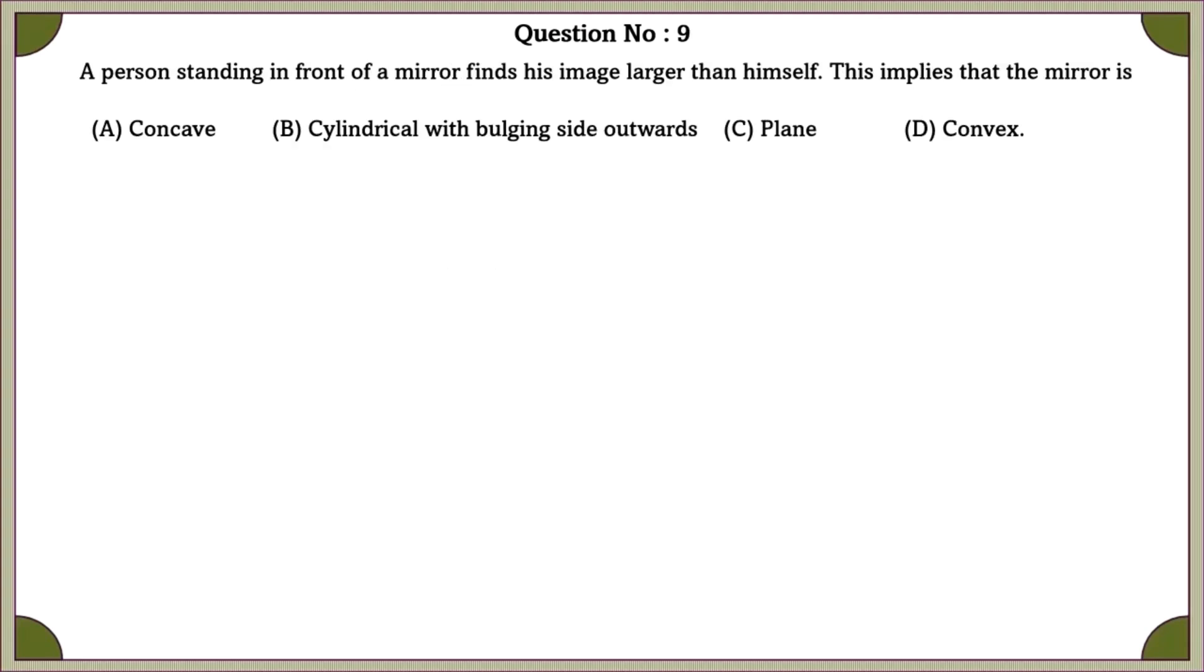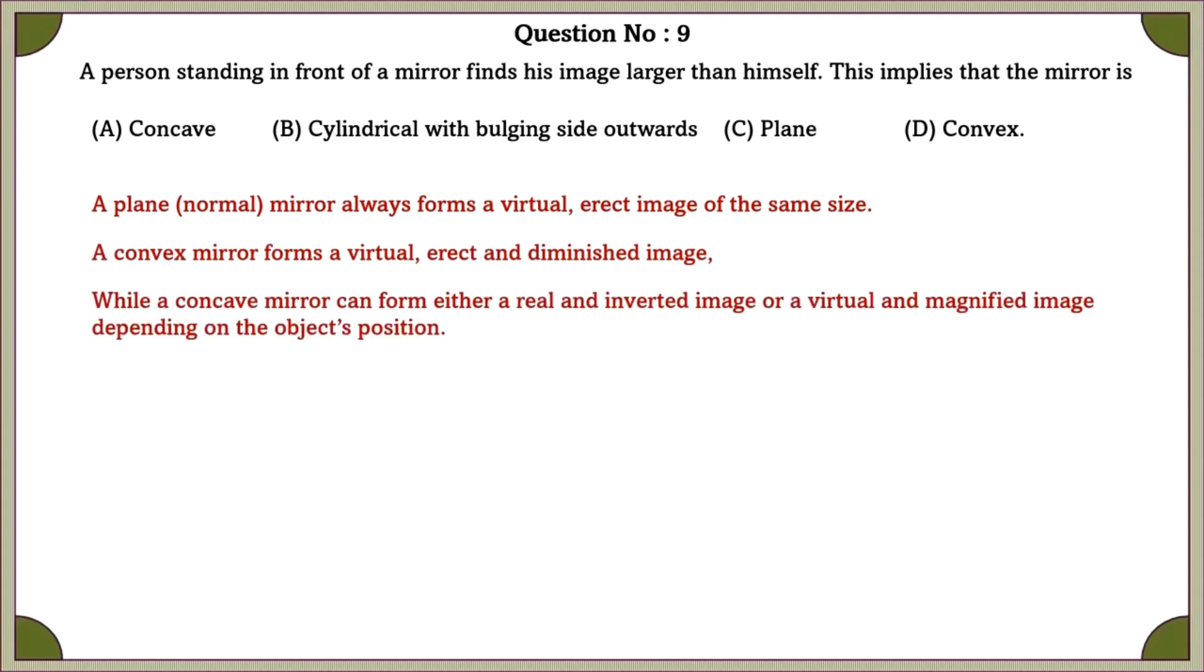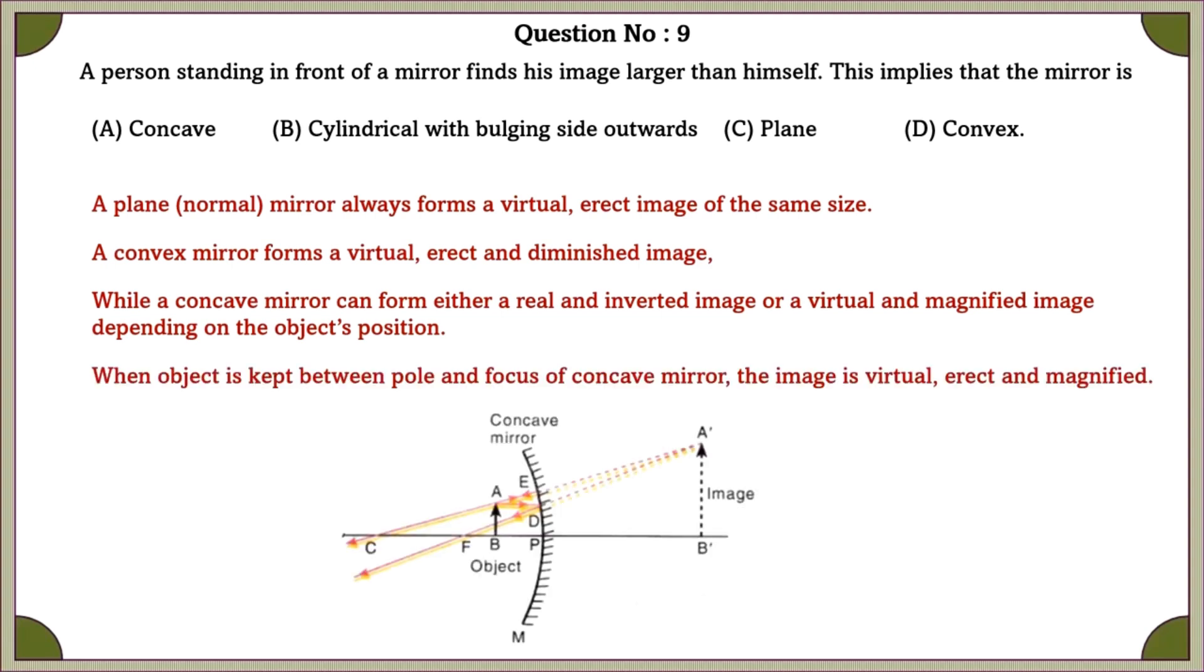Question number 9. A person standing in front of a mirror finds his image larger than himself. This implies that the mirror is. A plane mirror always forms a virtual, erect image of the same size. A convex mirror forms a virtual, erect, and a diminished image. While a concave mirror can form either a real and inverted image or a virtual and magnified image, depending on the object's position. When an object is kept between pole and focus of a concave mirror, the image is virtual, erect, and magnified. Therefore, the mirror is the concave mirror.